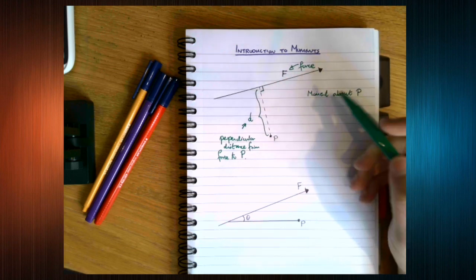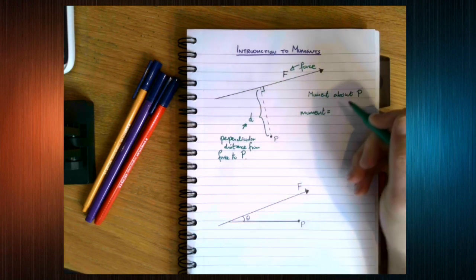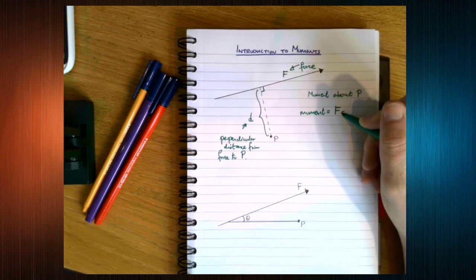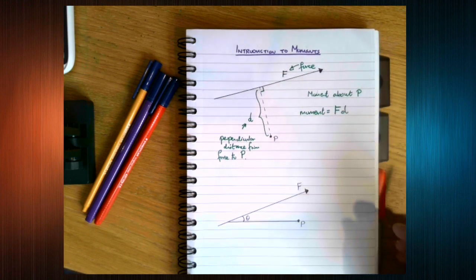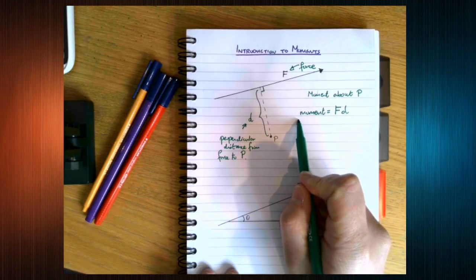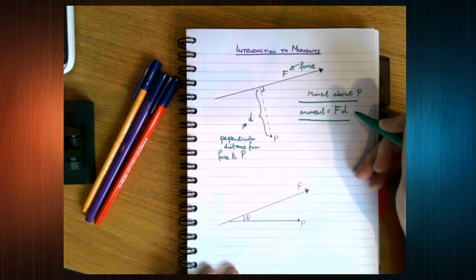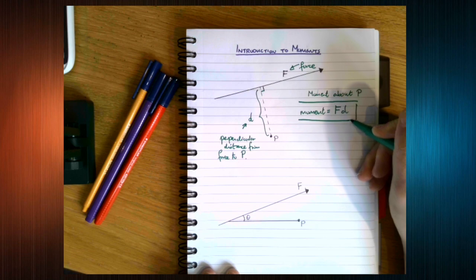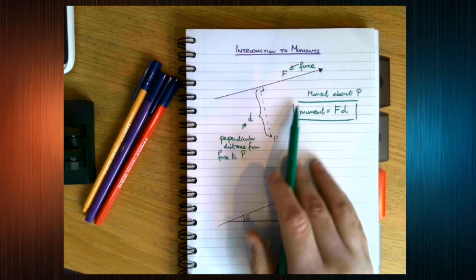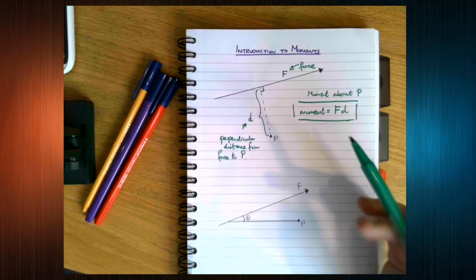So the moment is equal to the product of force and distance. And that's how we calculate moment. Moment is force times the perpendicular distance. Now you need to learn this formula. It's not a particularly difficult formula. But you do need to learn it. There isn't really a symbol for moment that we use. It's just called moment.